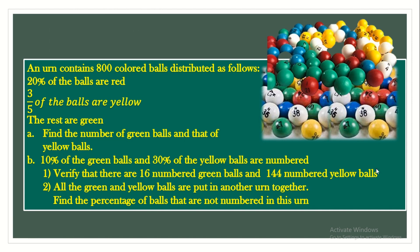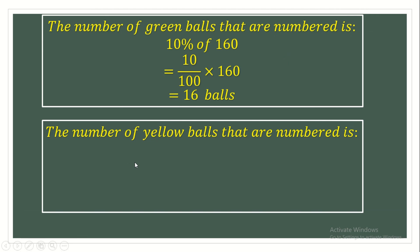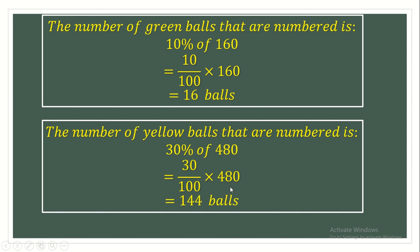Now we also need to prove that the number of numbered yellow balls is 144. We have 30% of the yellow balls numbered. The yellow balls total 480. So the number of numbered yellow balls is 30% of 480, which is 30 over 100 times 480. This gives us 144 balls, confirming the claim.